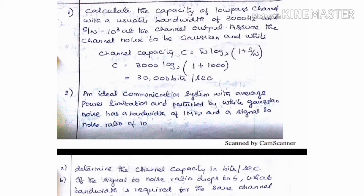Channel capacity C is equal to W log to the base 2 of 1 plus S by N, where W is the bandwidth value 3000. So C equals 3000 times log to the base 2 of 1 plus 10 to the power 3. C is equal to 30,000 bits per second.